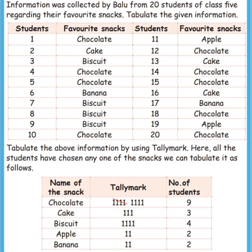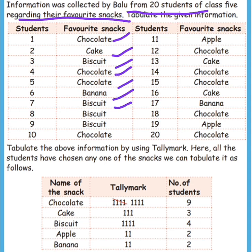Children, see the first sum. Information was collected by Balu from 20 students of class 5 regarding their favorite snacks. We need to tabulate the given information. The 20 students' favorite snacks are: chocolate, cake, biscuit, chocolate, banana, biscuit, biscuit, biscuit, chocolate, apple, chocolate, cake, chocolate, cake, banana, chocolate, apple, chocolate.